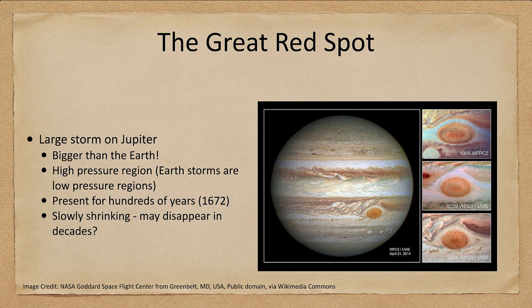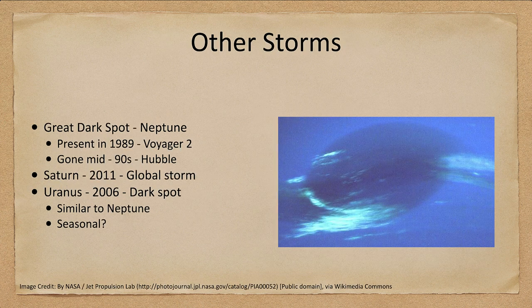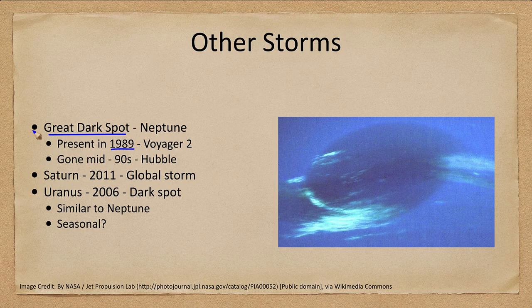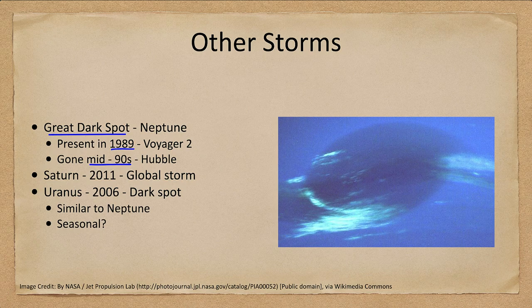The Great Red Spot is not the only giant storm in the solar system. Neptune also had a Great Dark Spot, seen in 1989 when Voyager 2 visited the planet. By the mid-1990s when Hubble was able to observe Neptune, it was gone. We don't know how long these storms last — they could last hundreds or thousands of years, or they may only persist a few years, varying from planet to planet. We don't yet have enough data to say anything definitive about these storms.